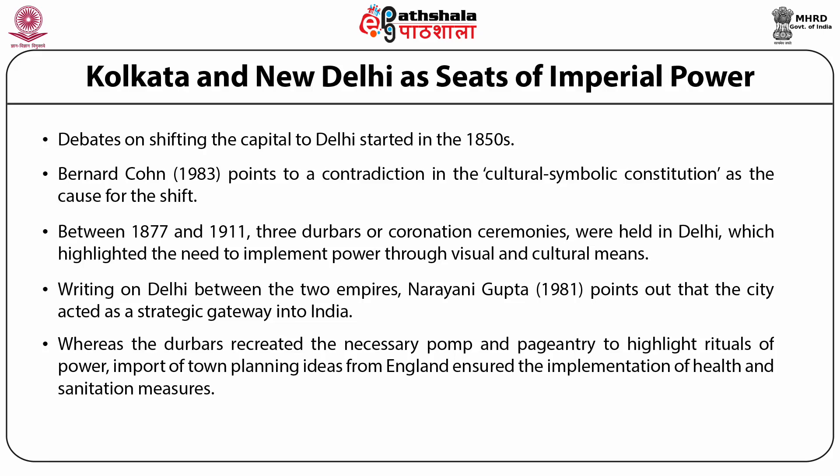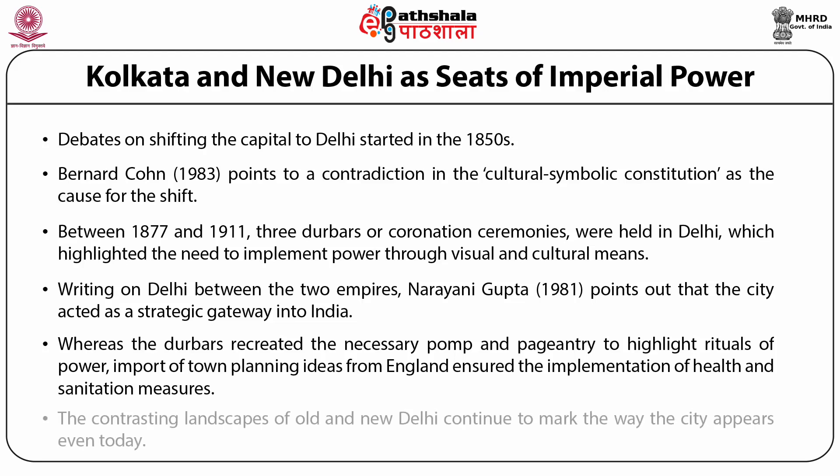From the hexagonal layouts of the roads, the broad avenues, and the clear lines of classical architecture used to build the Viceroy's House — now Rashtrapati Bhavan — the debates around planning New Delhi belied the political ambitions associated with colonial rule. The contrasting landscapes of Old and New Delhi continue to mark the way the city appears even today.